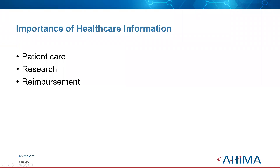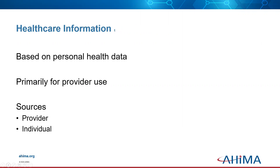The importance of healthcare information: healthcare information is used to monitor the quality of patient care, conduct medical research, and accurately reimburse healthcare organizations. Healthcare information is based on personal health data about individuals, primarily for provider use and the management of patient care. Sources of health information can include the healthcare provider through documentation in the health record, and the individual through the use of a personal health record, your PHR.